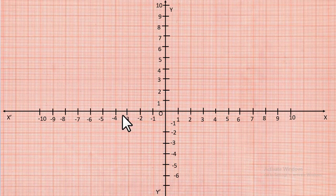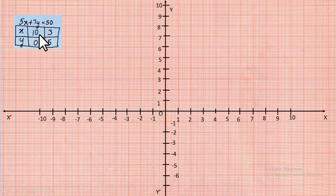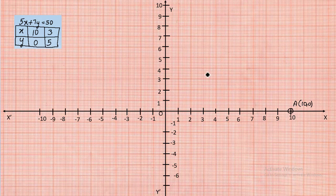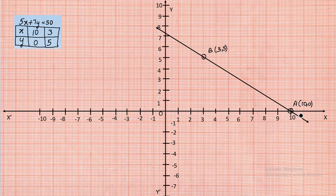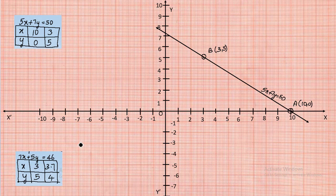Now let us plot the graph. For equation one (5x + 7y = 50), the first point is at x = 10, y = 0 — mark this as point A. The second point is at x = 3, y = 5 — mark this as point B. Draw a line through points A and B; this line represents the equation 5x + 7y = 50.